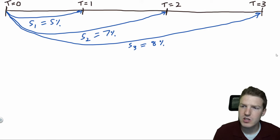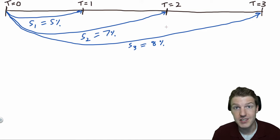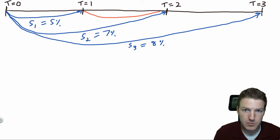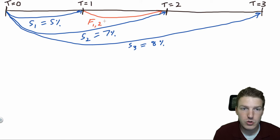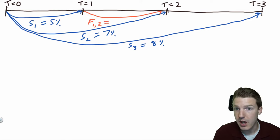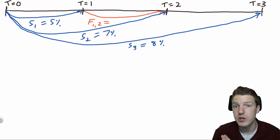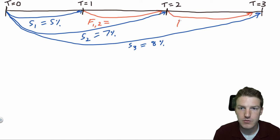But what if I wanted to lend you money for one year starting one year from today? So not starting today, one year from today — that's what we call the forward rate, denoted by the orange line. We'll call that F1,2. And then we also have a forward rate for lending money starting two years from today for one year — we could call that F2,3.